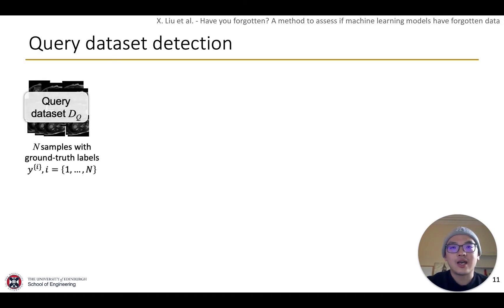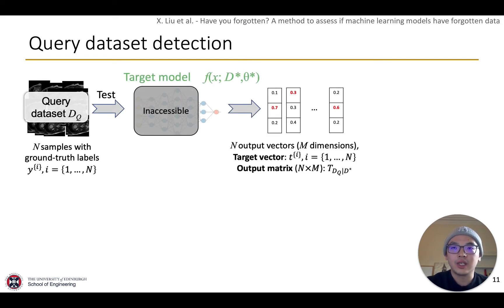Inspired by leakage detection methods, we first calculate the confidence distribution by inputting the query dataset DQ to the target model. As a result, n output vectors can be obtained. Then, n confidence scores are chosen using the ground truth label Y. We can calculate the cumulative distribution of the n confidence scores to finally obtain the confidence distribution here.